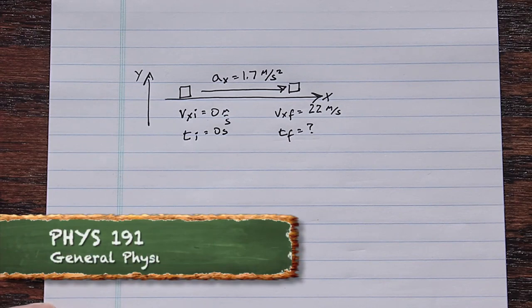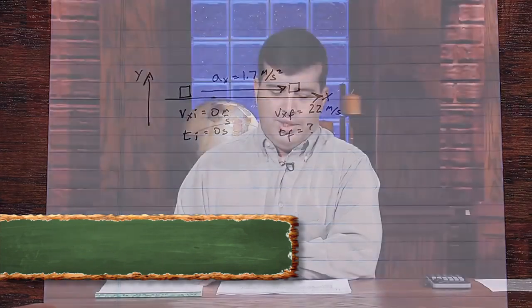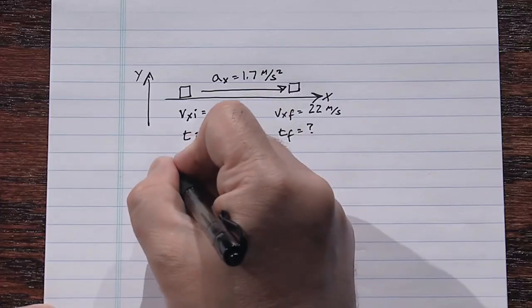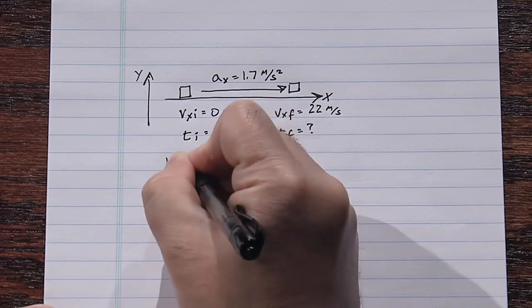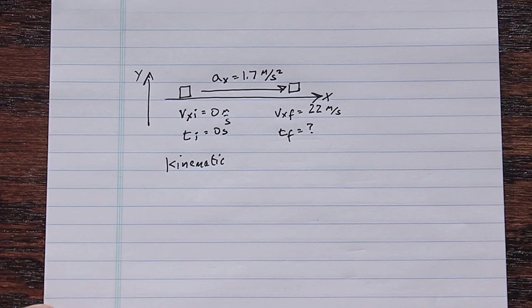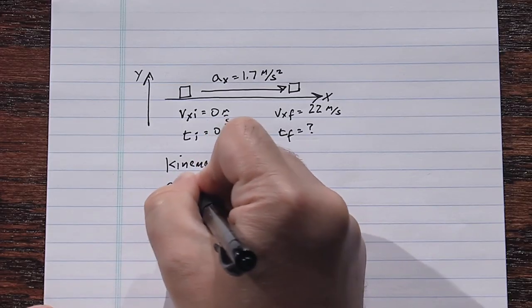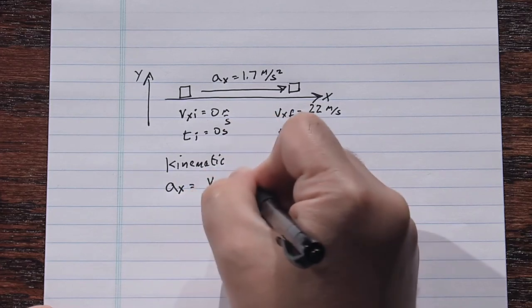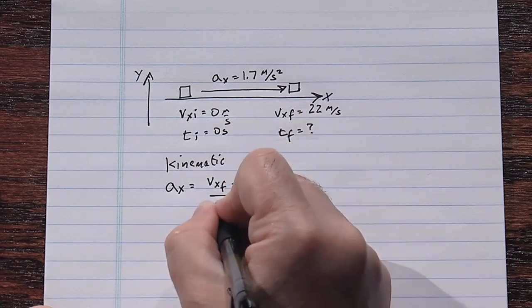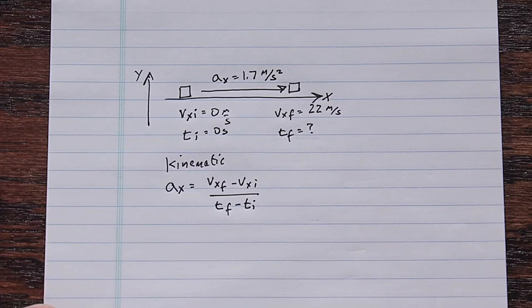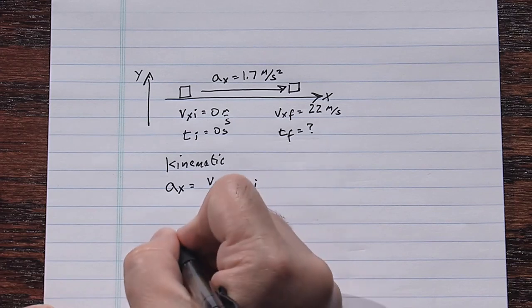We recognize a change in velocity, change in time, and acceleration — this is a kinematic situation. We use our starting equation: ax equals (vx_final minus vx_initial) divided by (t_final minus t_initial). Plugging in: 1.7 m/s² equals (22 m/s minus 0 m/s) divided by (t_final minus 0 s).